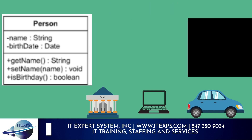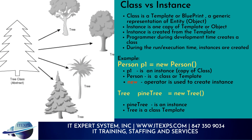Let's compare class versus instance. A class is a template or blueprint — a generic representation of an entity or object. An instance is one copy of the template. The programmer creates a class during development time; instances are created during run or execution time. Example: Person p1 = new Person() — p1 is an instance, a copy of class Person. The new operator is used to create an instance. Another example: Tree pineTree = new Tree() — pineTree is an instance, Tree is the class template.